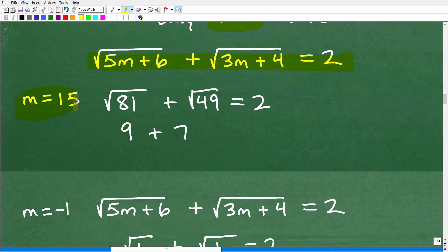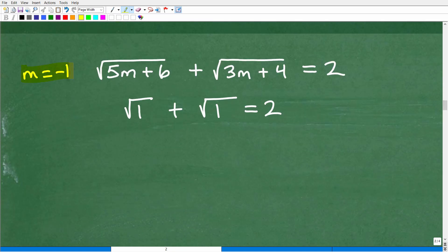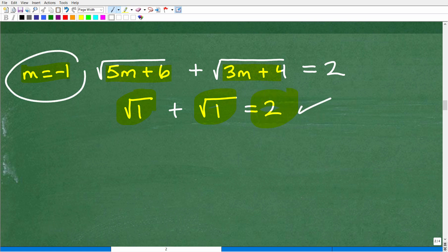So when we go ahead and plug in 15, replace m for 15 for m, and plug this in, we get the square root of 81. And over here, we get the square root of 49. Now, although we're dealing with plus or minus, we're going to end it with 9 plus 7. And that is going to not be equal to 2. So that is a problem. So we're going to have to throw that out. But here, when we have m is equal to negative 1, you can see when I plug in negative 1 for m, I'm going to get the square root of 1. And when I plug in negative 1 for m here, I'm also going to get the square root of 1. So square root of 1 plus square root of 1 will give me that 2. And this is the solution.